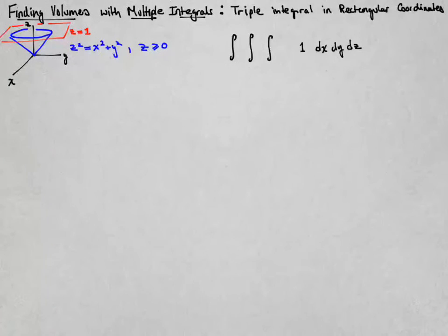In this video, we're going to find the volume of a cone region that I've drawn here, this blue cone sitting below the plane z equal to 1, and we're going to calculate it as a multiple integral.